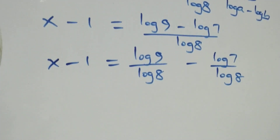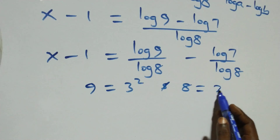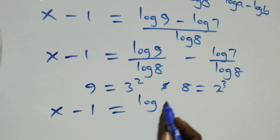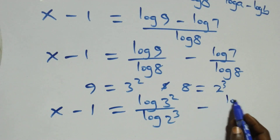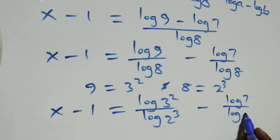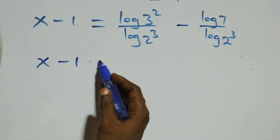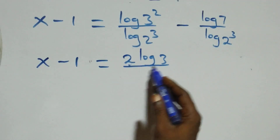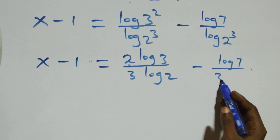Next step, we write 9 as 3 times 3, that is 3 squared, and 8 as 2 times 2 times 2, that is 2 cubed. This becomes x minus one equals log 3 squared over log 2 cubed, minus log 7 over log 2 cubed. Applying the power rule of logs, the exponents come out: x minus one equals 2 log 3 over 3 log 2, minus log 7 over 3 log 2.